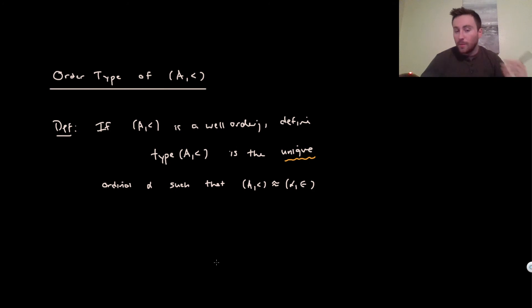And again, we proved this in the previous video that such an ordinal exists and is unique. So this previous result justifies thinking about the ordinals as representing all the possible ways to well-order a set.